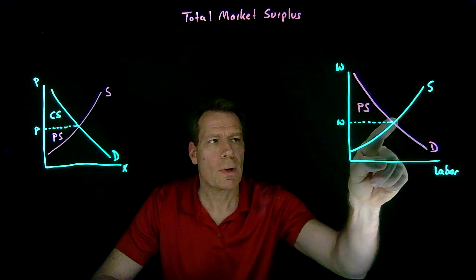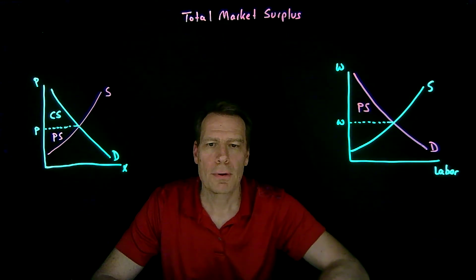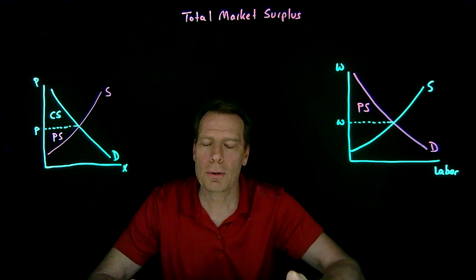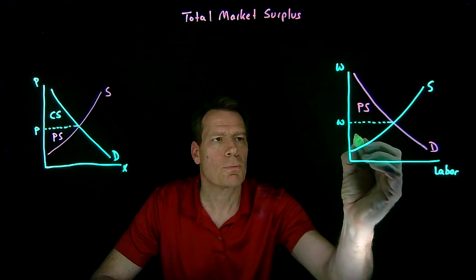And the area below the wage down to the labor supply curve would become worker surplus. We could call it consumer surplus, but let's just call it worker surplus.